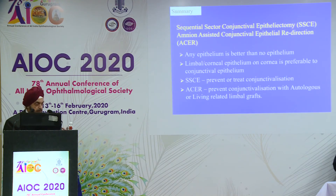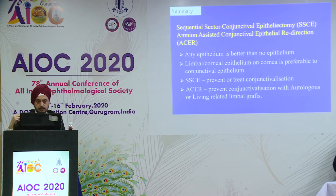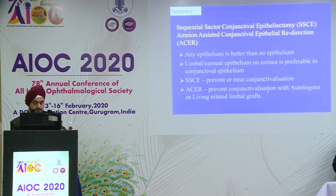Sequential sector conjunctival epitheliectomy is a good technique, but if you are doing a limbal stem cell transplant you need to do amnion-assisted conjunctival epithelial redirection — ACER. The principle is: any epithelial cover for the cornea is better than no epithelium, so if the patient comes straight after a chemical burn, let the conjunctiva grow, because otherwise the cornea will melt. Limbal corneal epithelium is of course better than conjunctival epithelium if you have that option. SSE can prevent or treat conjunctivalization, but ACER is specifically to prevent conjunctivalization associated with limbal stem cell grafts.